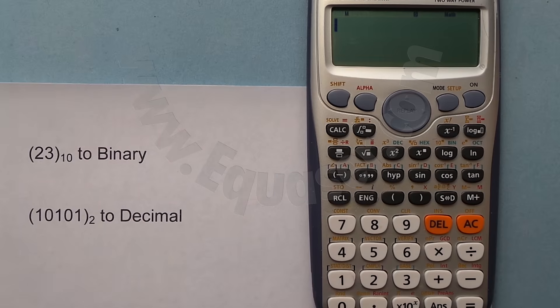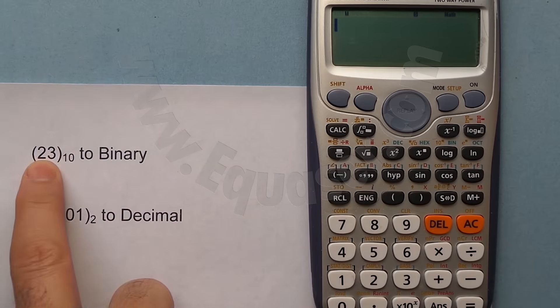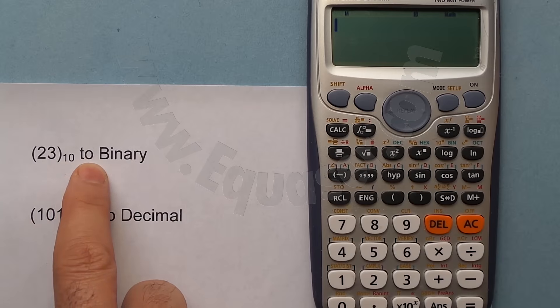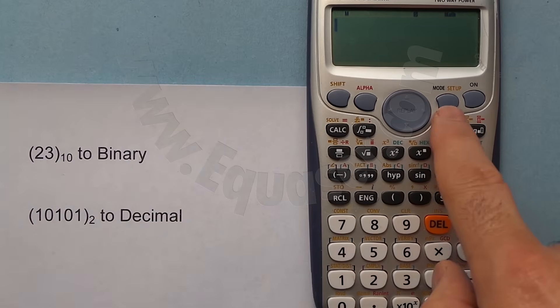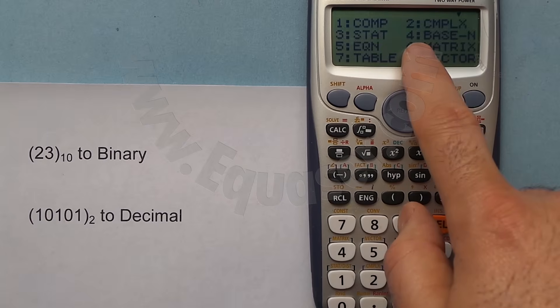To do that, let's convert 23 base 10, which is decimal, to binary. To convert it in the calculator, we press mode and then base-n, which is number 4.